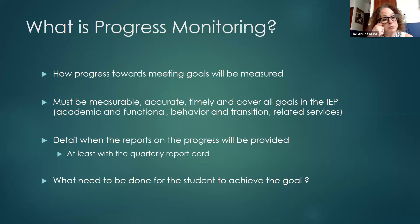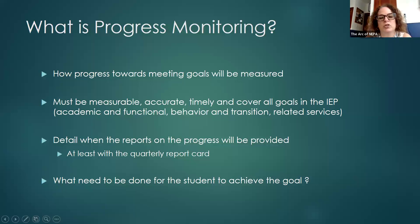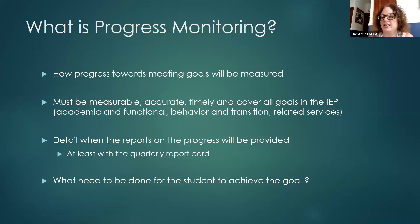These progress monitoring reports should detail the progress that is going to be provided. It's going to be at least quarterly with the report card. One last thing to remember is that it's showing what needs to be done for the student to achieve the goals — it should detail what needs to happen for the student to make progress against their goals.